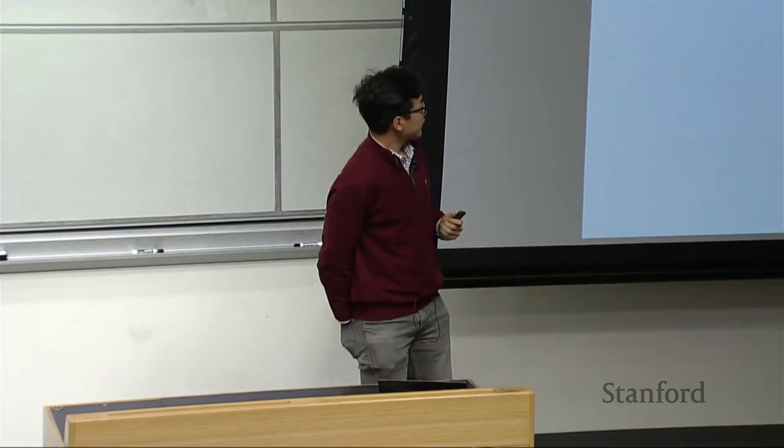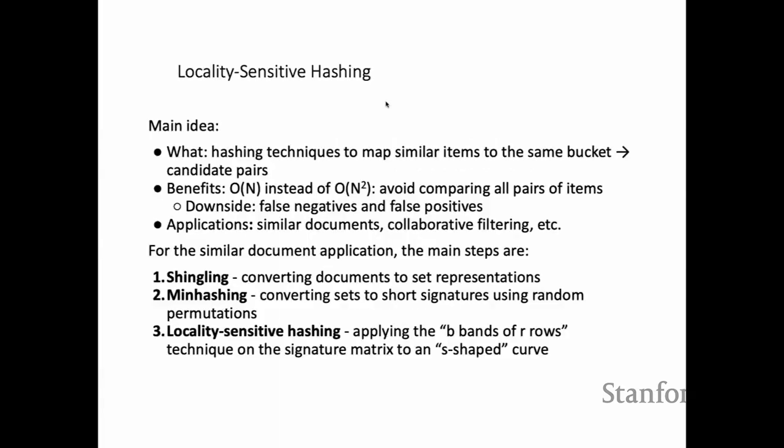Now we'll talk about LSH and clustering. We discussed a very important algorithm for finding similar items or similar documents called locality-sensitive hashing. This algorithm requires only order-N runtime instead of order-N-squared — you do not need to compare every pair. LSH requires three steps: first, shingling of the documents; second, min-hashing; third, the LSH step itself.